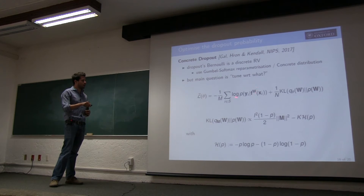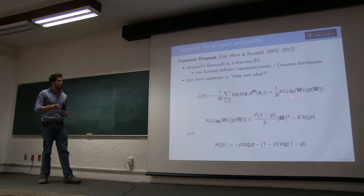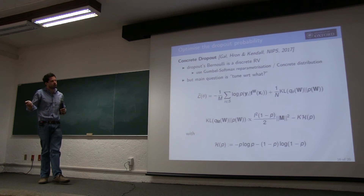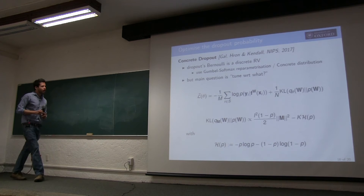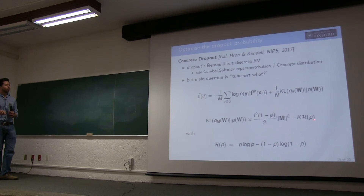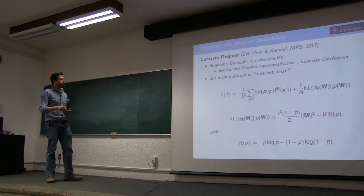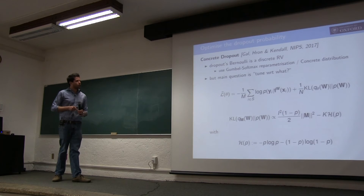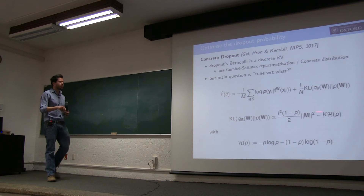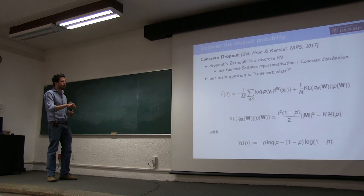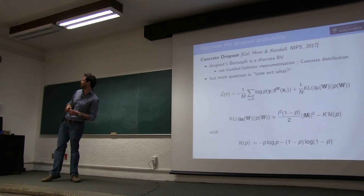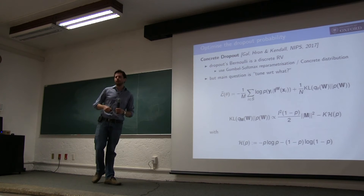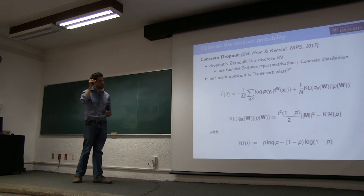If we fix dropout p to 0.5, the entropy term is just a constant — our objective reduces to normal dropout plus L2 penalty. But if we want to optimize p, this entropy term becomes very important. The full objective is the log likelihood over a stochastic forward pass, plus a bunch of penalty terms normalized by n (number of data points), with m being the batch size.